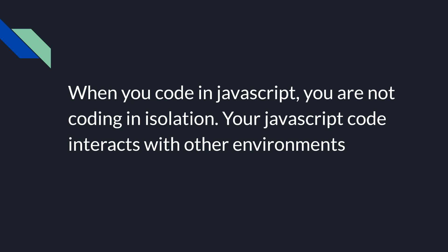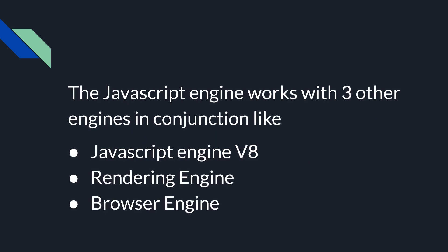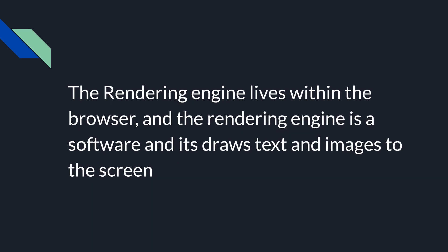The JavaScript engine — most famously V8 — works in conjunction with three other engines: the rendering engine and the browser engine. So the JavaScript engine, rendering engine, and browser engine all work together. The rendering engine lives within the browser and is a software, most probably written in C++, and its main functionality is to draw text and images to the screen.